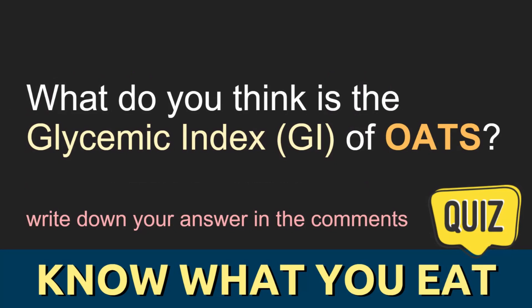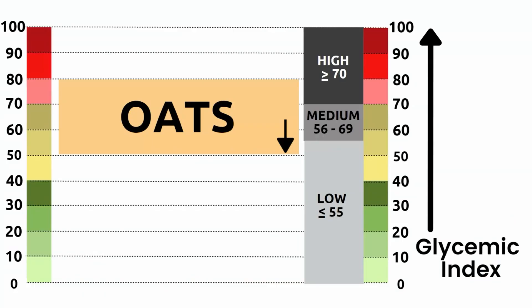Before I give you the answer, it would be great if you give it a guess and write down your answer in the comment section. That is the best way to learn and retain new information. Here's the answer. The glycemic index of oats can be low, medium, or high. The GI of oats can vary from the high 40s, that is in the low GI range, to higher than 70, that is in the high GI range.